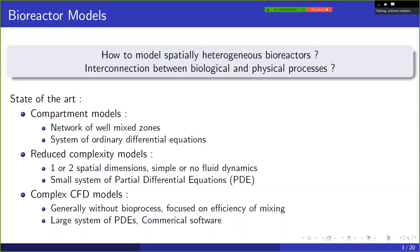Then you have some models that you could consider reduced complexity models. So generally they only consider one or two spatial dimensions and no real fluid dynamics, simple fluid dynamics. And then you have a jump towards very complex CFD models. And it's only in the recent years that people have been able to couple complex computer fluid dynamics with a biological process model.